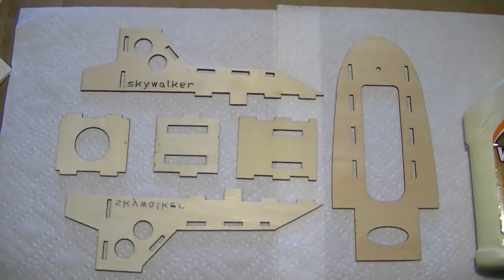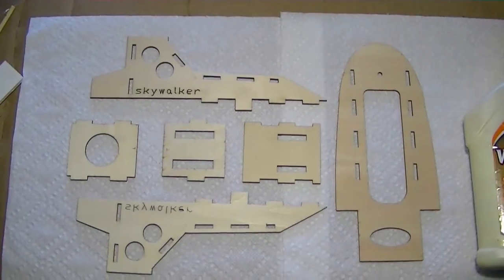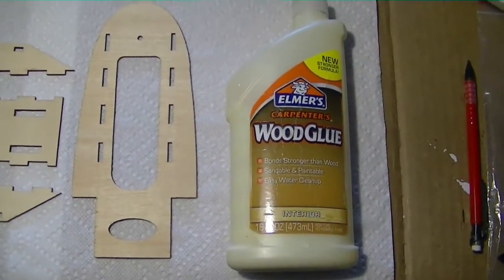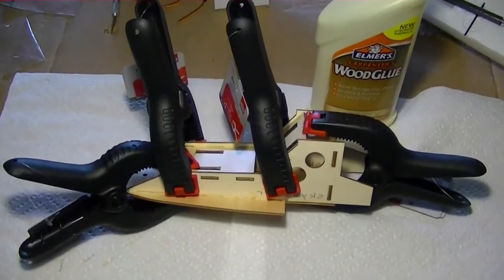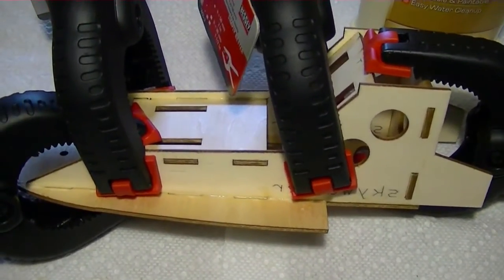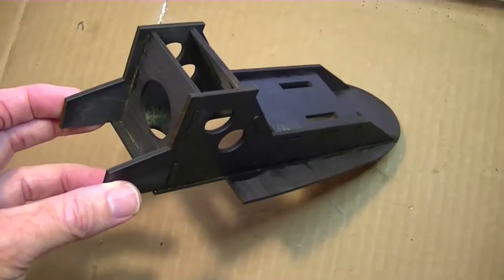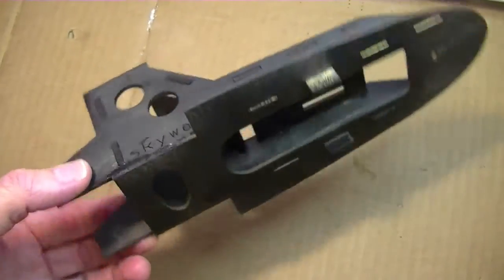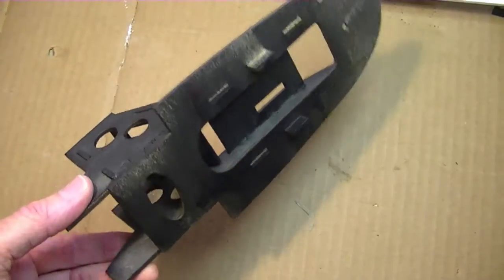The Skywalker pod came like this from BevRC, and we glued it together with some Elmer's wood glue. So once the wood glue dried on the pod, I went ahead and sprayed it with some black paint, just to give it a nice finished look.